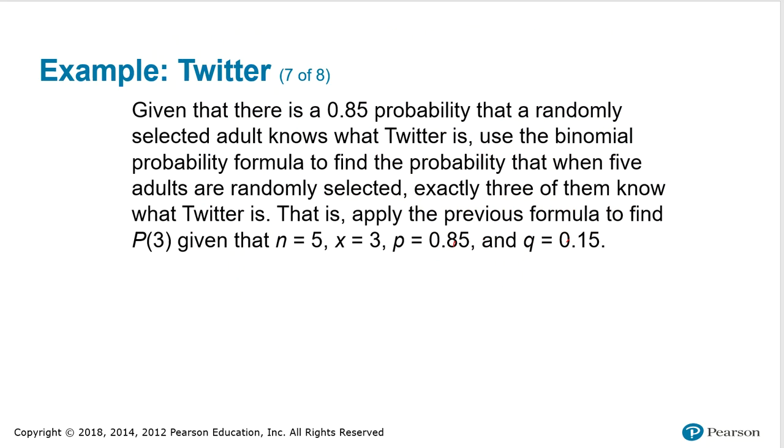Here's an example. Given that there is a .85 probability that a randomly selected adult knows what Twitter is, you are to use the binomial probability formula to find the probability that when five adults are randomly selected, exactly three of them know what Twitter is. That is, you're going to apply that binomial probability formula to find p of three, and in the problem, you're given n is five, five adults are randomly selected,